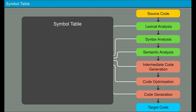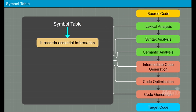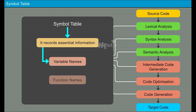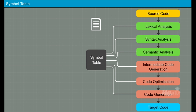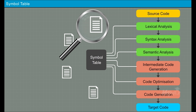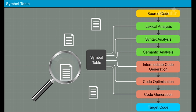The symbol table is a data structure that records essential information about the names used in programs, such as variable names, function names, and interfaces. With the symbol table, a compiler can easily search any record quickly.